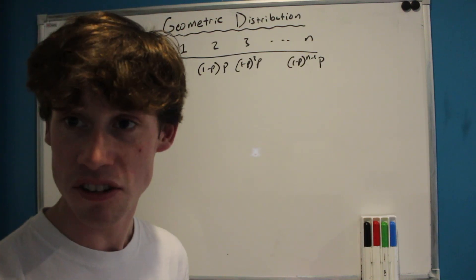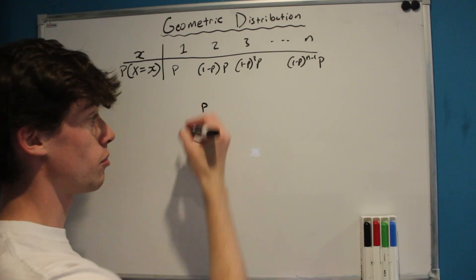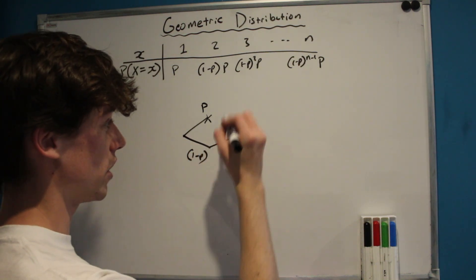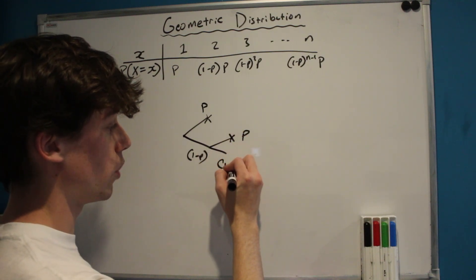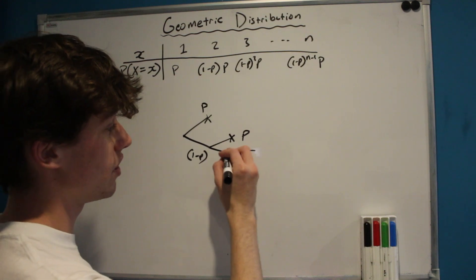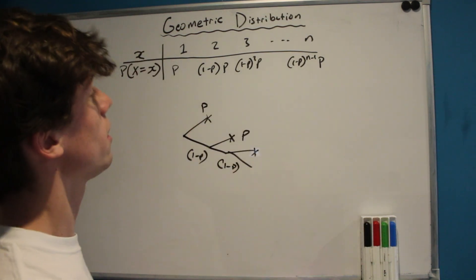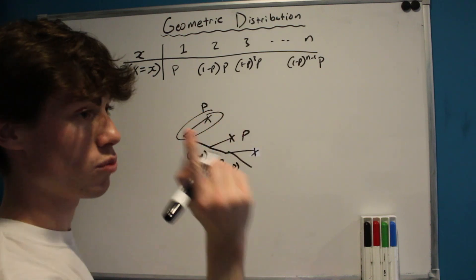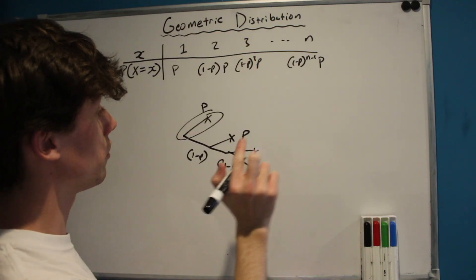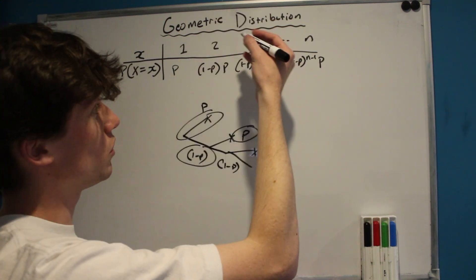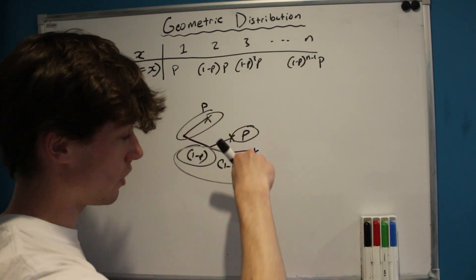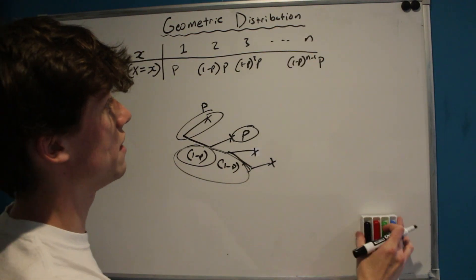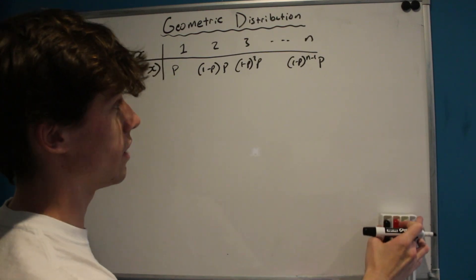We can capture this best with a tree diagram. After one trial there's a probability p of succeeding, at which point we stop, and there's a probability of 1 minus p that we don't succeed. On our next trial there's again a probability p of succeeding and 1 minus p that we don't. So the probability of x equal to 1 is just p, the probability of taking two trials is (1-p)·p, three trials is (1-p)²·p, and in general the probability that x equals n is (1-p)^(n-1)·p.